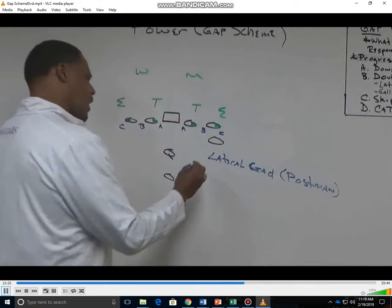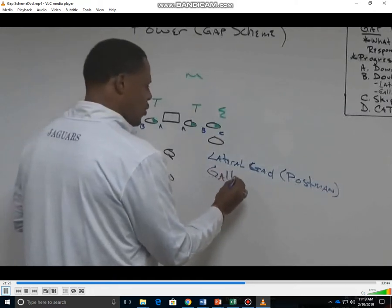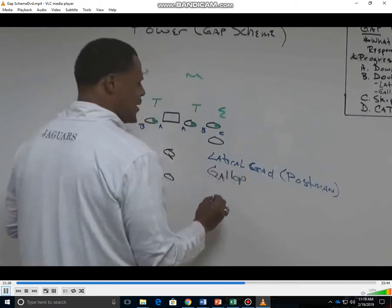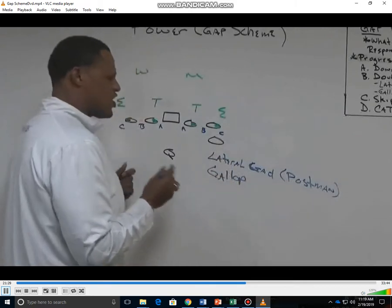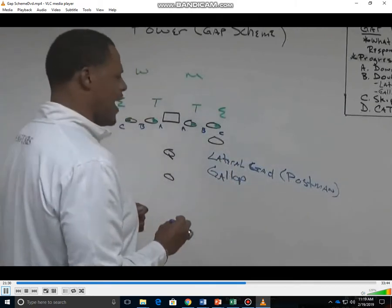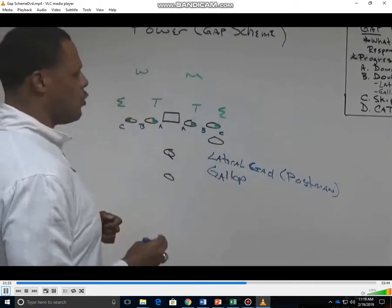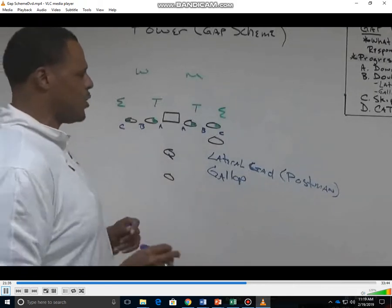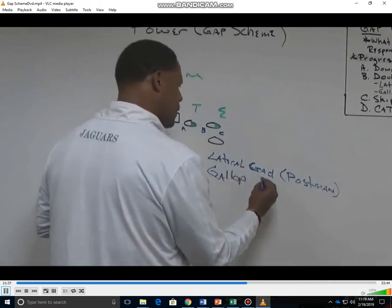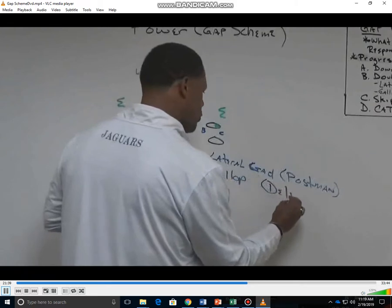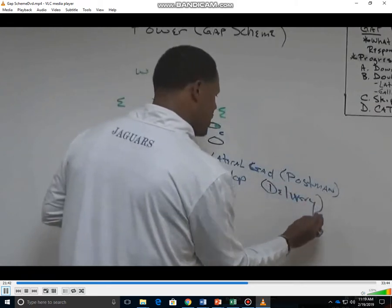Our gallop step is our offensive lineman responsible for getting cheek-to-cheek with the adjacent offensive lineman in order to get the movement we want so we don't get split on the double team. We refer to this young man as the delivery man. We want to have a postman and a delivery man.